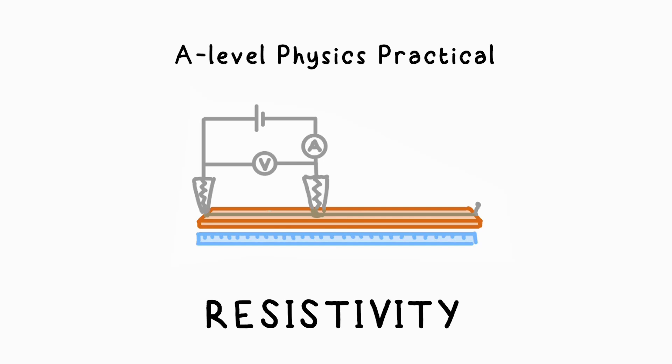I'm going to show you how to do the A-Level Practical, the investigation into how the resistance of a piece of metal wire changes with length or thickness, cross-sectional area.